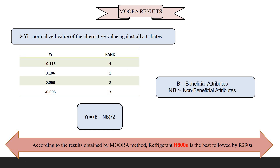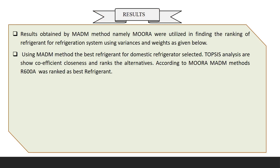R600A is the best refrigerant for domestic refrigerators. This is the result obtained using the MOORA method, confirming R600A as the optimal choice for domestic refrigerators.